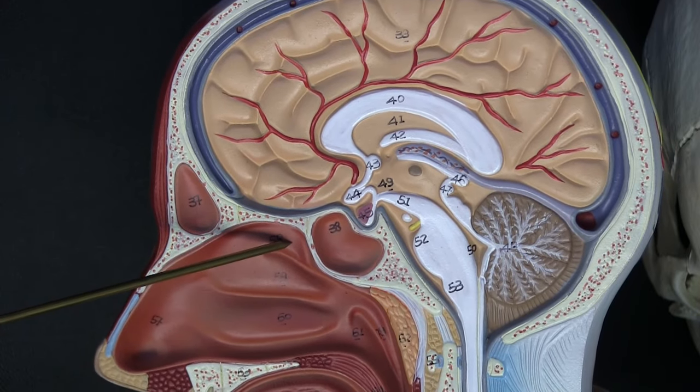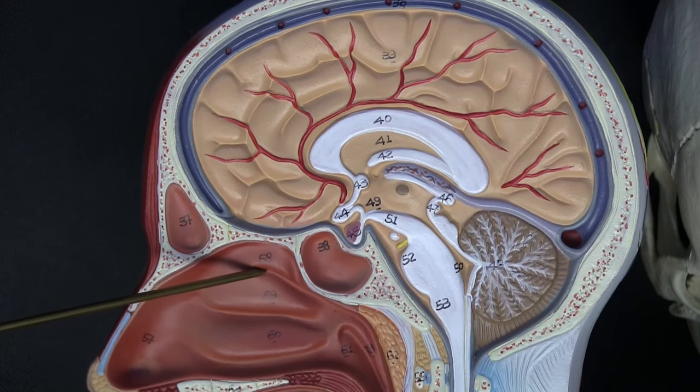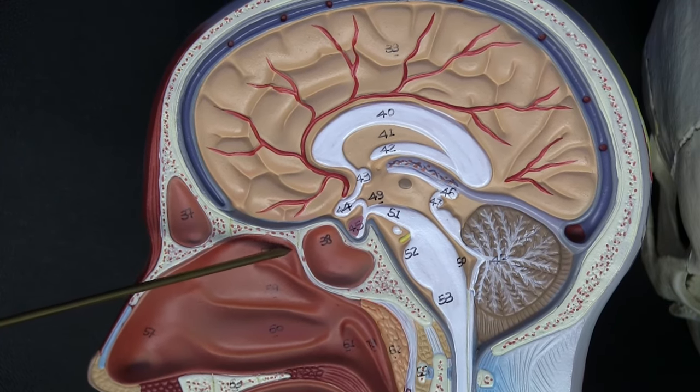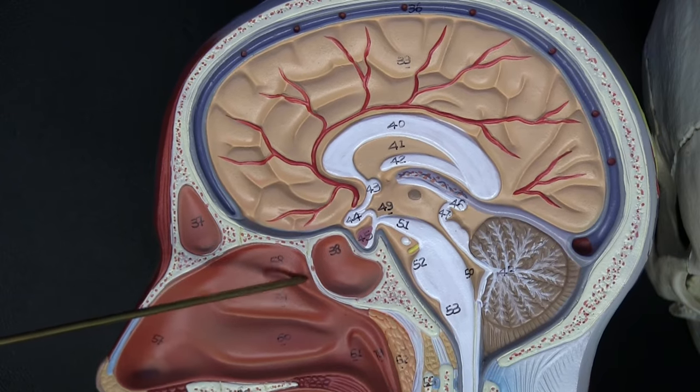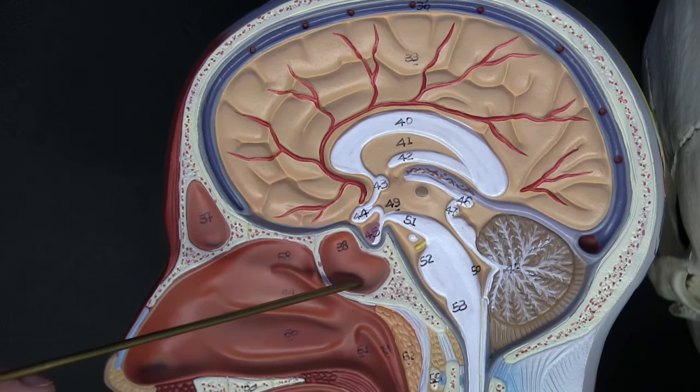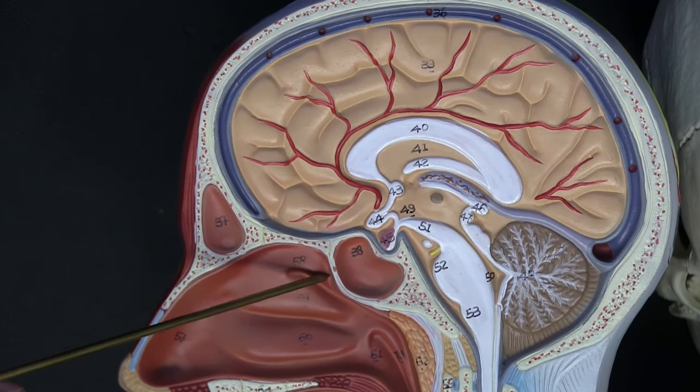Between the superior concha, which is much smaller, and the middle concha we have the superior meatus, more ethmoid air cells will drain there. And then here we have what's called the sphenoethmoid recess, where the sphenoid sinus in the body of the sphenoid bone is going to drain.